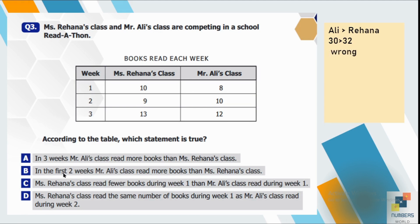Option B is in the first two weeks Mr. Ali's class read more books than Rihanna. For that purpose, we will add the number of books for the first two weeks. So 10 plus 8 is 18. So Ali's total is 18 and Rihanna's total is 19. So that is also wrong because 18 is not greater than 19. It's a wrong statement.